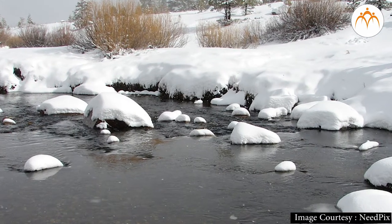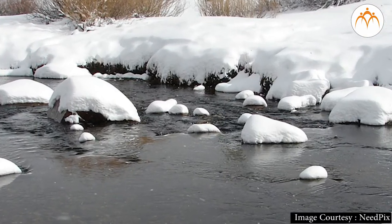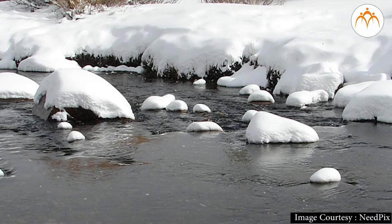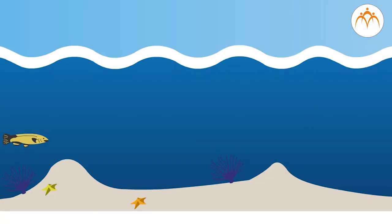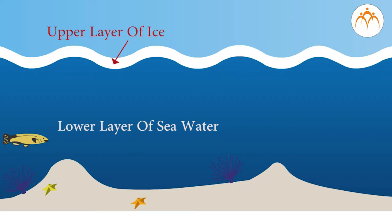Lakes and rivers freeze in winter as temperature goes on falling below 0 degrees Celsius. Water at 4 degrees Celsius has maximum density so it forms the lower layer. As the temperature falls further, it is converted to ice and forms the upper layer, as the density of ice is less than water.